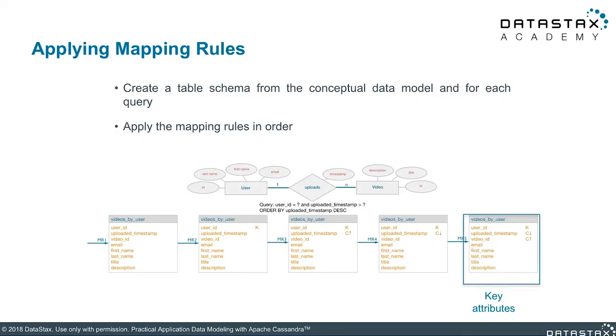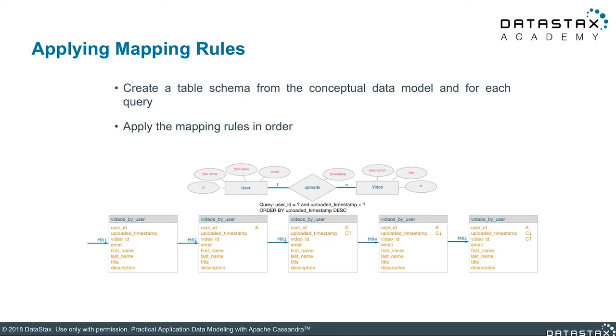Notice those four previous steps all had to do with the query we were performing. Modeling for Apache Cassandra is first query-driven, and then we add uniqueness. This fifth step is just to satisfy the uniqueness constraint — we add our key attributes. The key attribute for a user uploading a video is the video ID, because videos sit on the many side of the relationship type. A user ID would show up multiple times and is not unique, but each video has its own unique video ID. Thus we add video ID as another clustering column at the end of our primary key. And that's it — five mapping rules to take the conceptual model and the application workflow and create your tables.